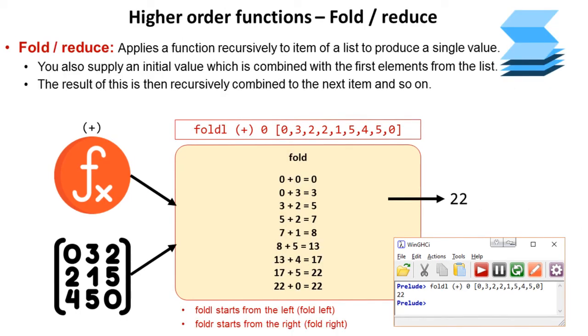The final function is fold or reduce. Now this applies a function recursively to items of a list to produce a single value. So it folds down a list to a single value. You supply an initial value which is combined with the first element of the list, in this case zero. The result of this is then recursively combined to each next item in the list.